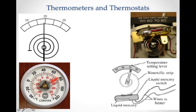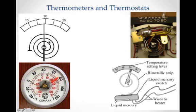The bimetallic strip can also work in a regular thermometer. By fixing the bimetallic strip in a particular location, as temperature increases or decreases, the coil will curl more or less, moving a needle tied to the coil either up or down depending on how much the strip bends. This is how a bimetallic thermometer works.